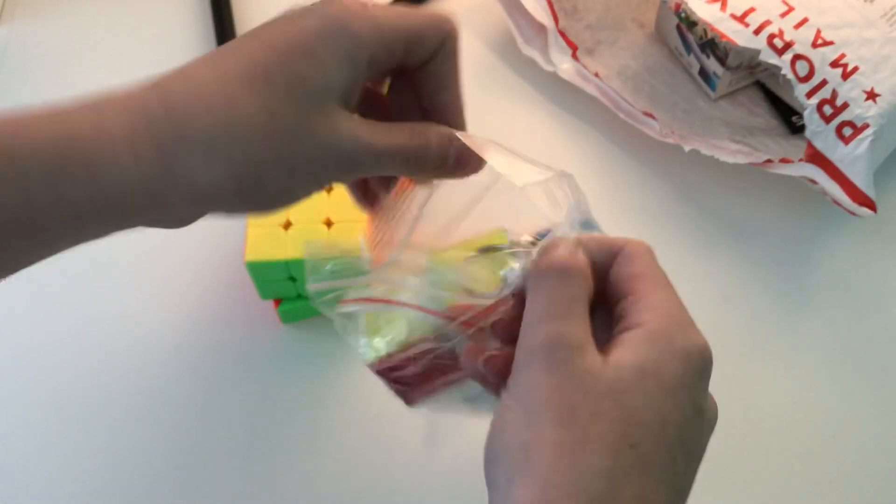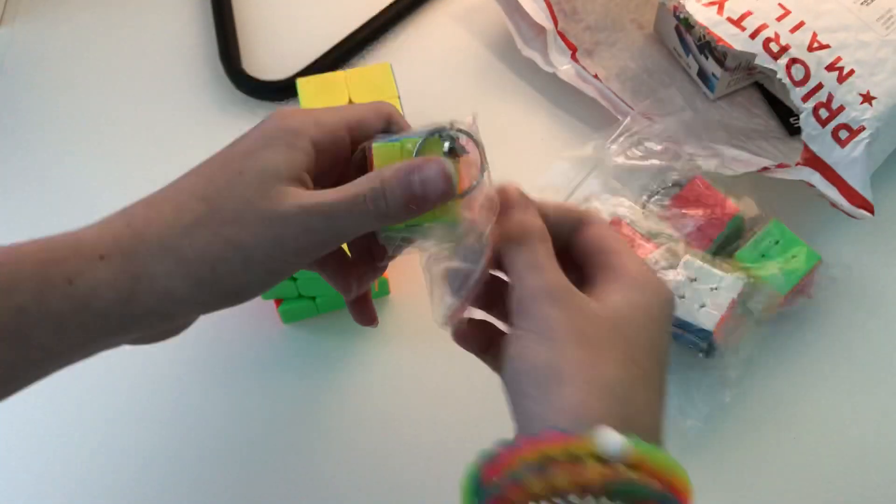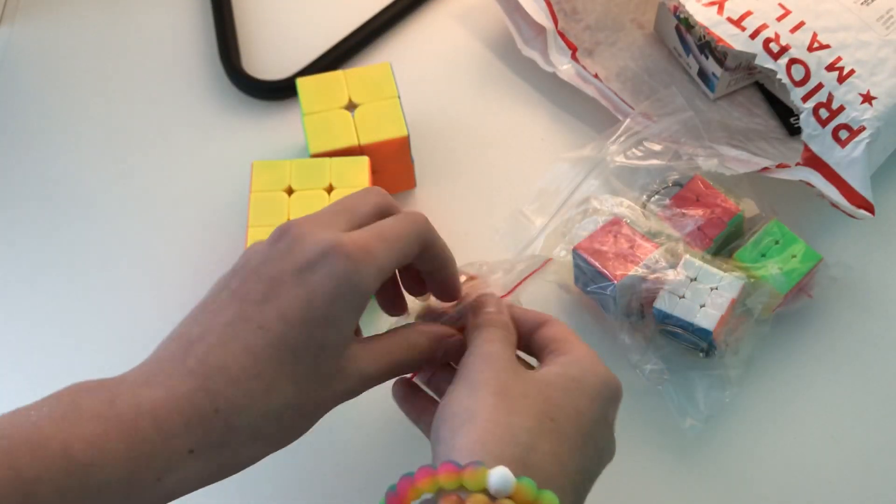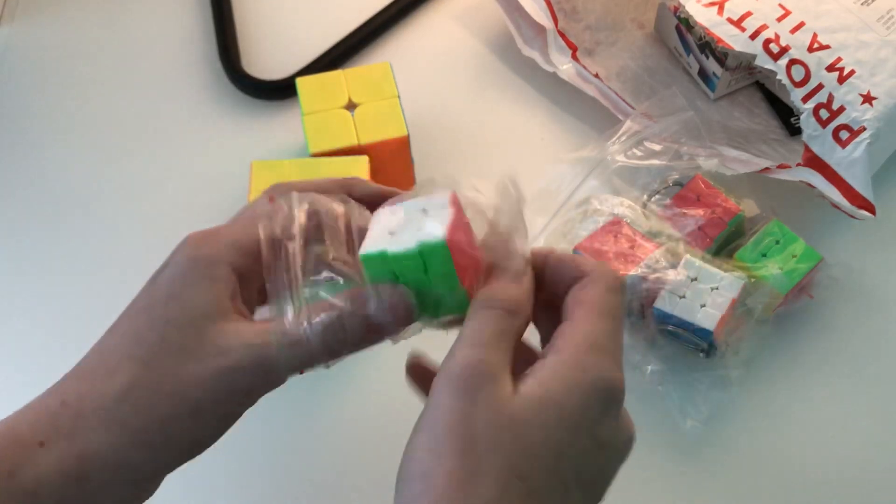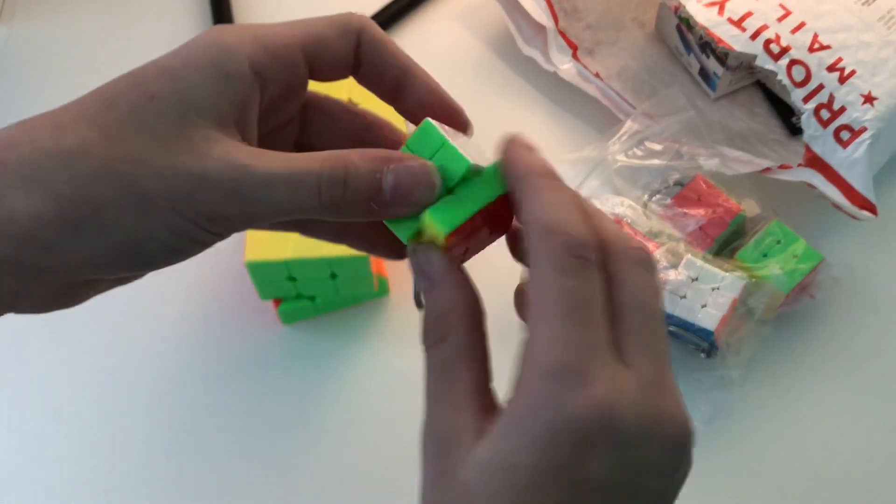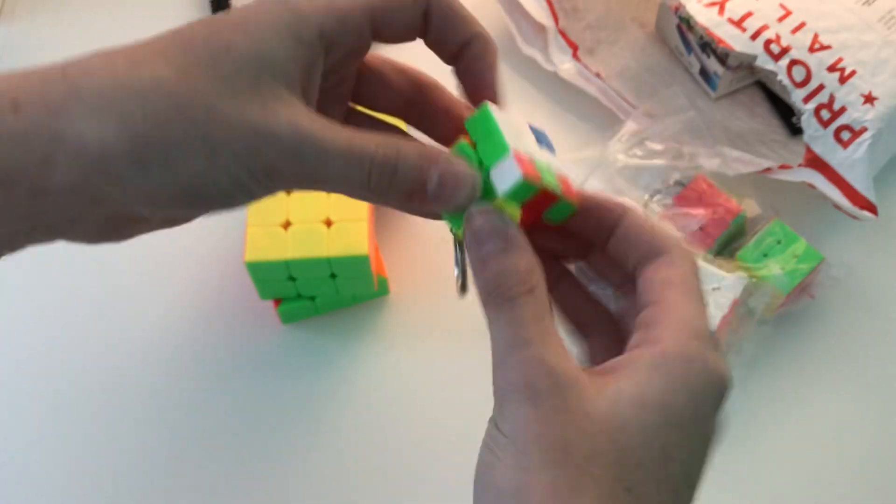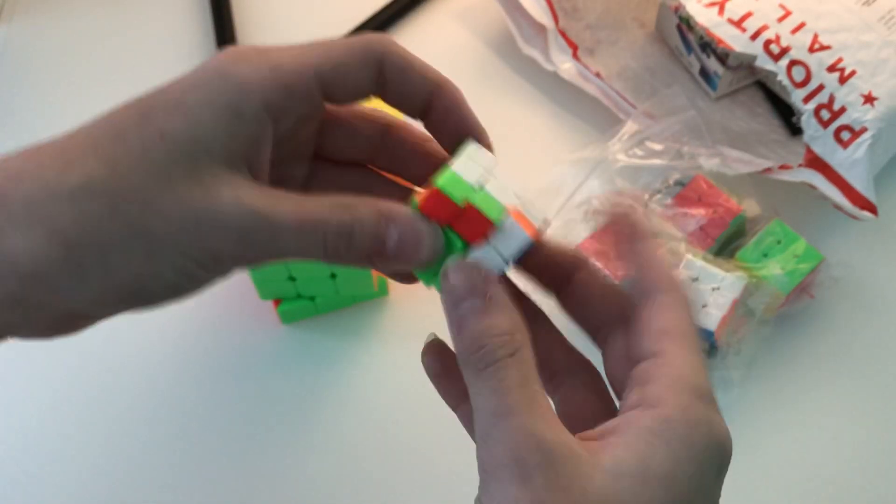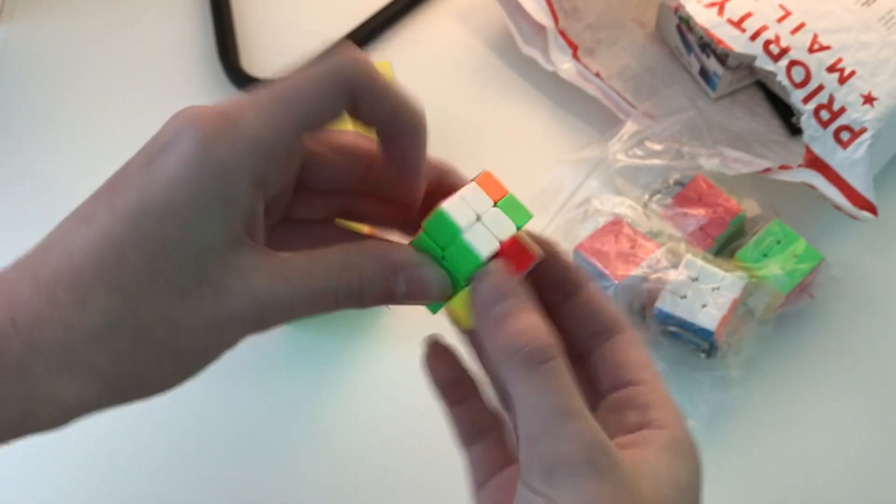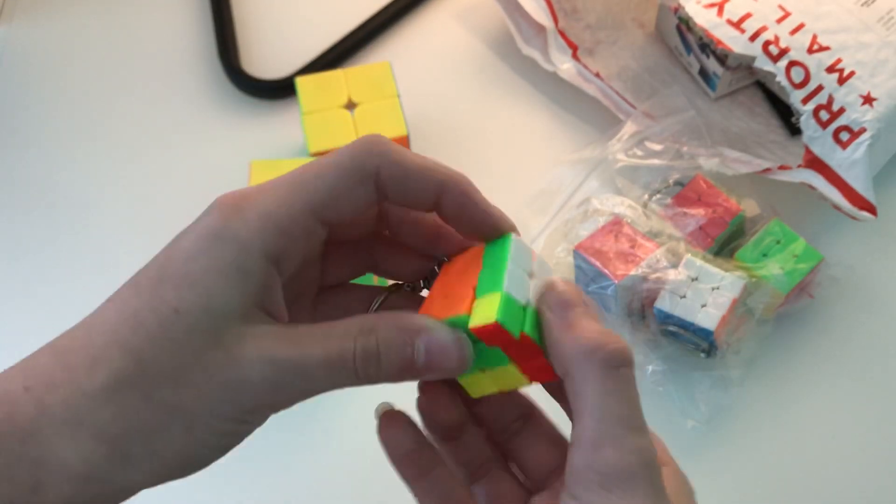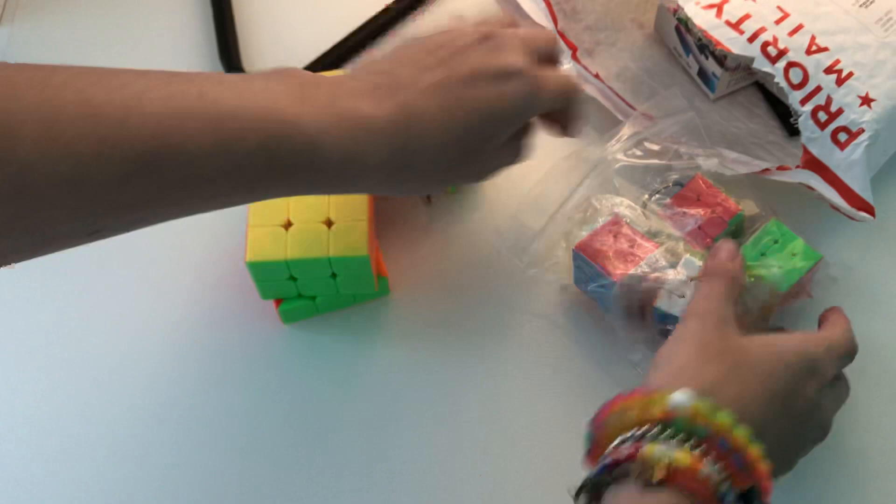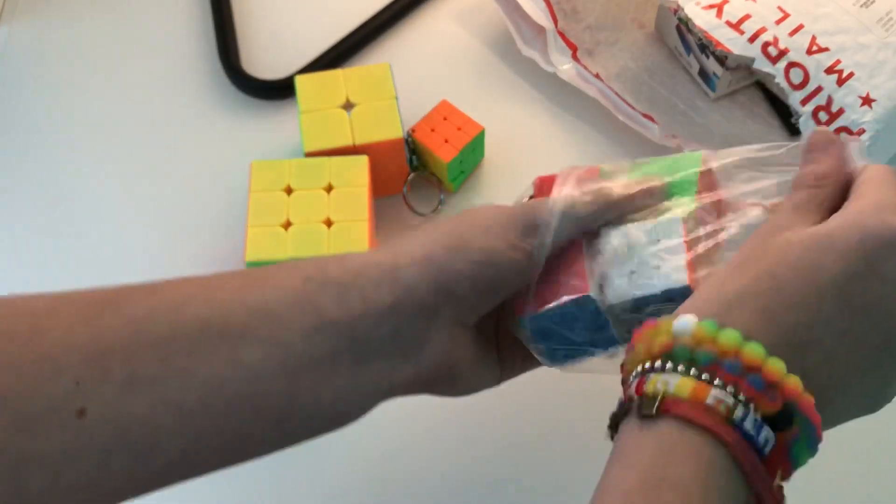So here we have a ton of mini cubes. I believe these are by Z. These are awesome little keychain cubes. There's a little bit of spring noise but they do turn very well. The keychain can kind of get in the way, but these are super fun and I got a ton of these.